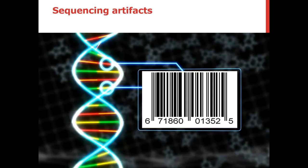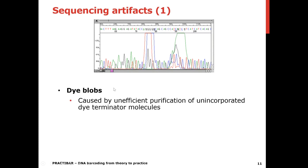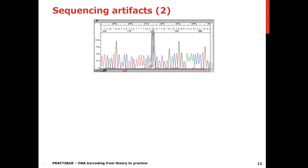And then you can have sometimes some sequence artifacts like you see here. So you get very high peaks and those are mainly found at the beginning of your trace files. And those are caused by, we call it dye blobs, and they are caused by inefficient purification of unincorporated dye terminator molecules. So they come off very early as a dye, very high dye. So you need to purify it better.